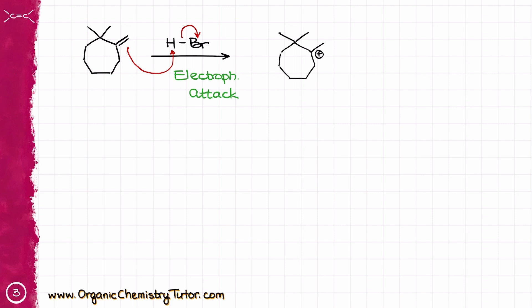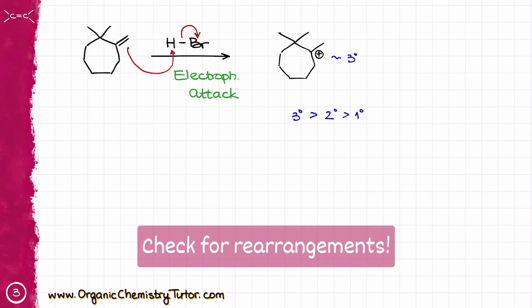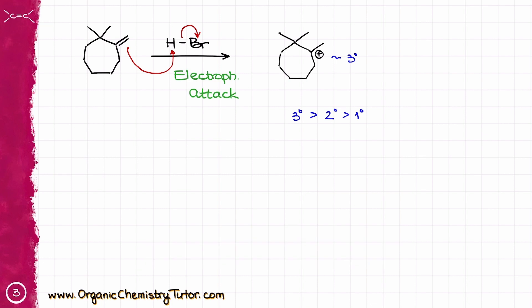As we know, the stability of carbocation goes in the row from the tertiary carbocation, which is more stable than a secondary carbocation, which in turn is more stable than the primary carbocation. So this one is a tertiary carbocation, and we are not going to expect any kind of rearrangements in this case, or are we?